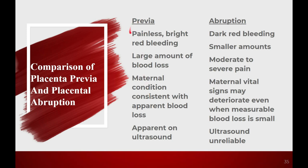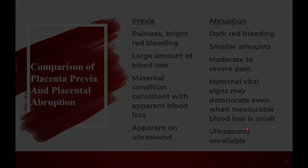Now let's compare previa and abruption. Previa is painless, bright red bleeding. Abruption is dark red bleeding in smaller amounts, because the baby's presenting part acts as a cork — all the blood pools up behind the baby. With a previa, apparent blood loss looks large; in abruption it looks smaller, though it may actually be larger — it's just obscured. Previa is painless; abruption has moderate to severe pain. Maternal vital signs with previa are consistent with what you see, but in abruption they'll deteriorate even when the apparent blood loss looks small. Previa is apparent on ultrasound; for abruption, ultrasounds are unreliable.